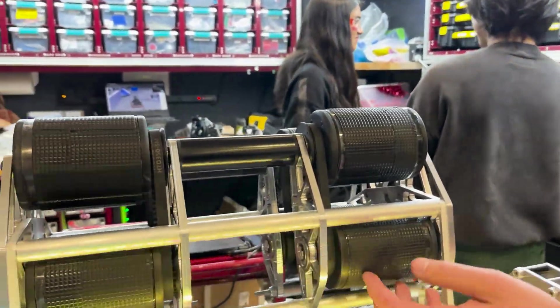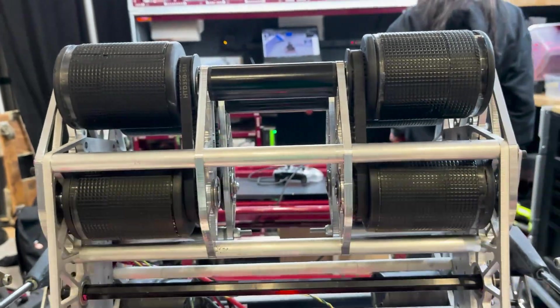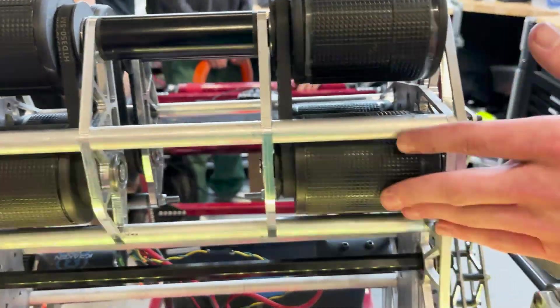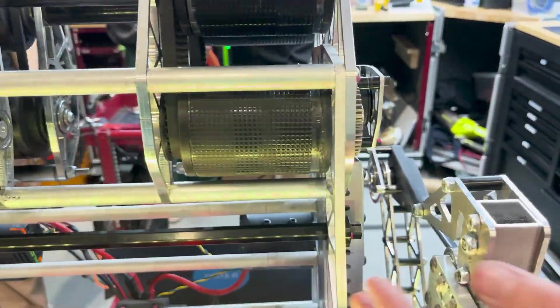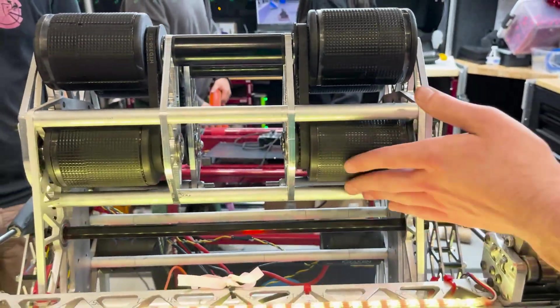And we realized it was because we didn't have enough contact with the note while it was shooting. So we added a second set of rollers up a little further so then it would have way more contact on the note and it would stretch it less while it was shooting through. So this helped us get really really consistent shots and very very stable shots as well.